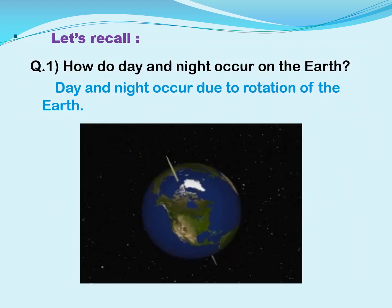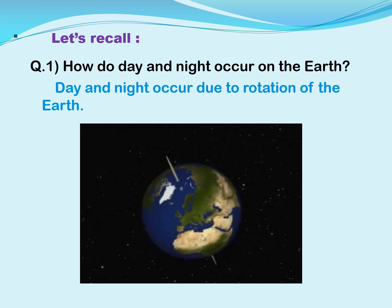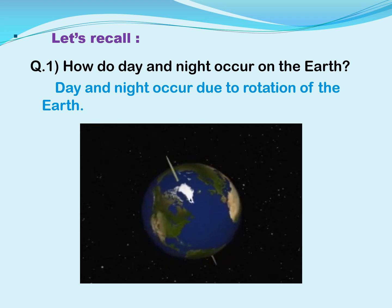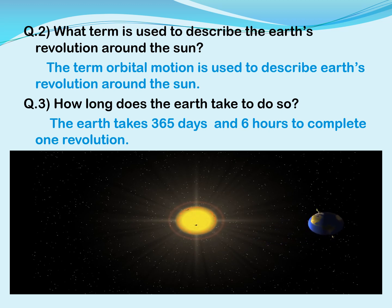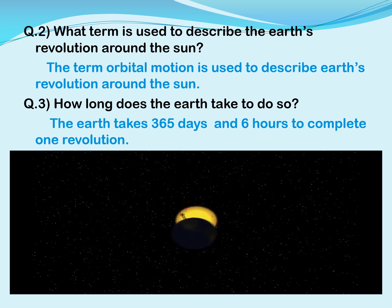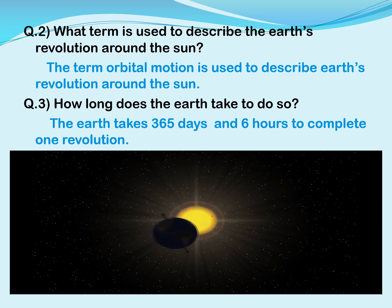Let's recall a few questions that we already studied in the previous year. How do day and night occur on the Earth? Day and night occur due to rotation or axial motion of the Earth on its axis. What term is used to describe the Earth's revolution around the sun? The Earth revolves around the sun — this is called revolution. The term orbital motion is used to describe the Earth's revolution around the sun.